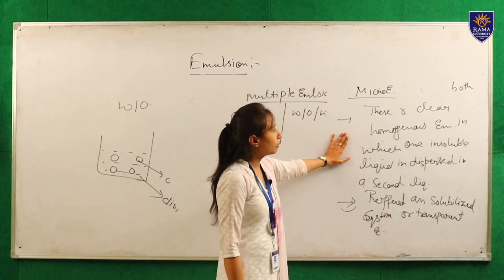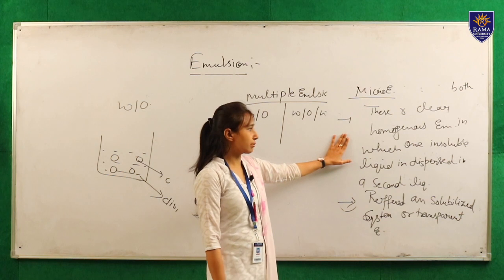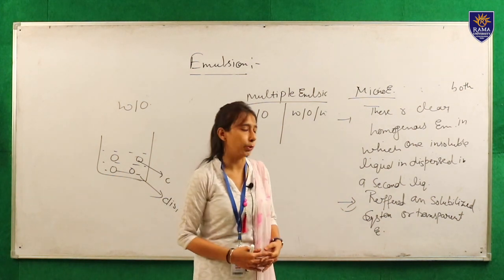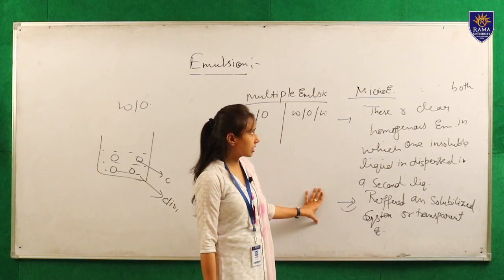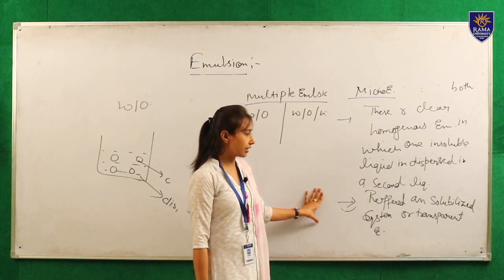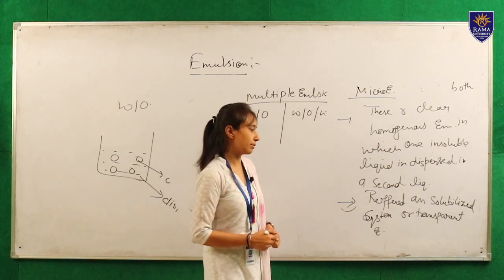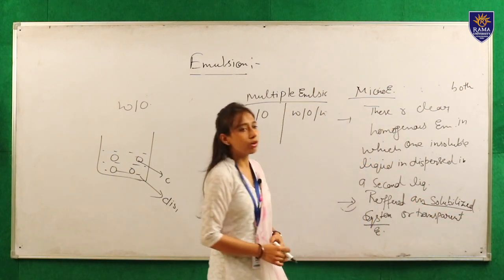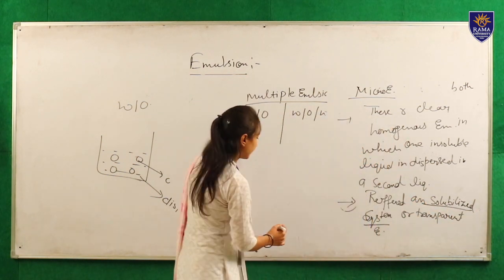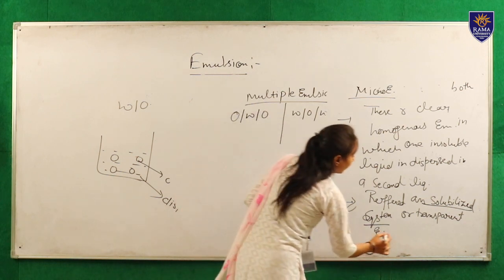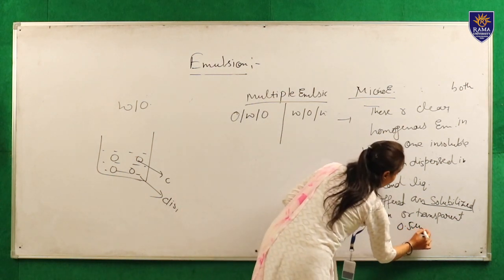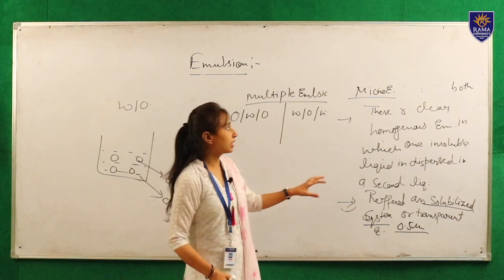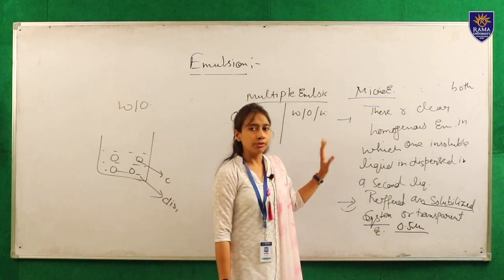Moving to the third category: micro emulsion. Micro emulsions are clear, homogeneous emulsions in which one insoluble liquid is dispersed in a second liquid. The main advantage is that micro emulsions are referred to as a solubilized or transparent system because the globule size is below 0.5 micrometers.